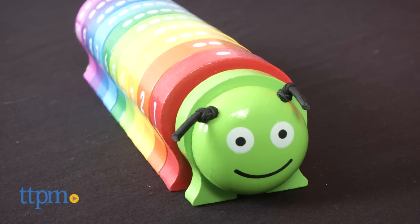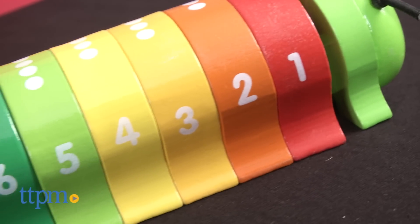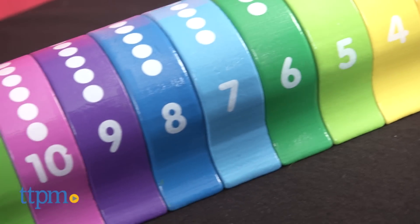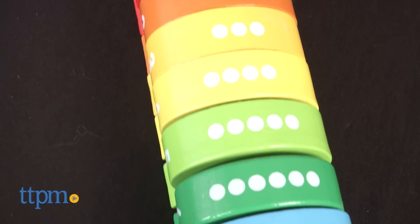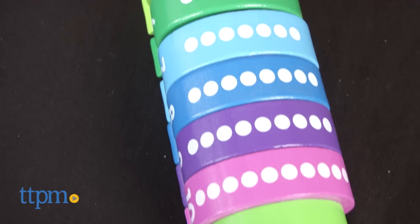With the feel of a classic wooden toy, the friendly-looking caterpillar features 10 rainbow-colored pieces to take off, count, or put back on. Each piece includes a number and dots equivalent to that number.